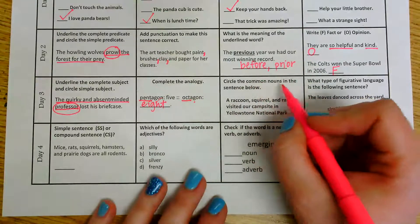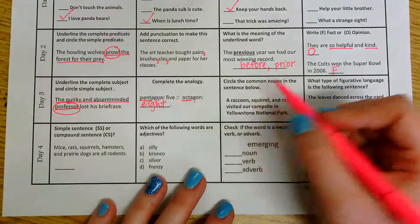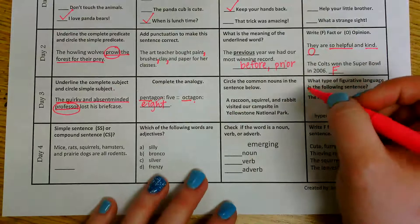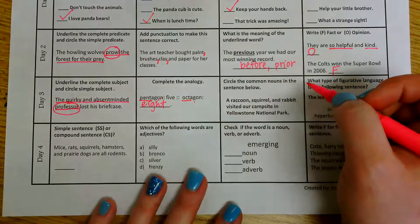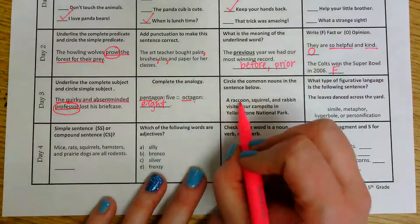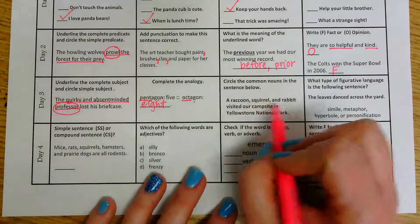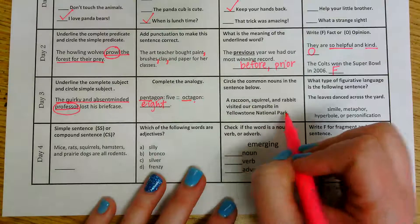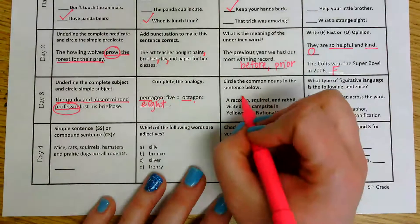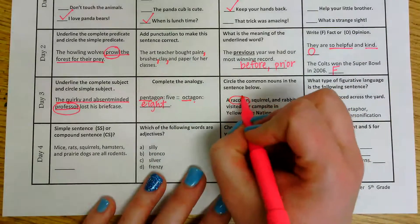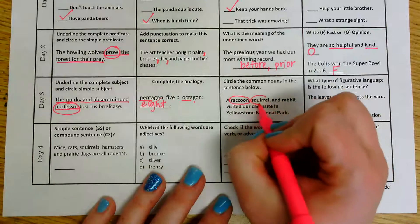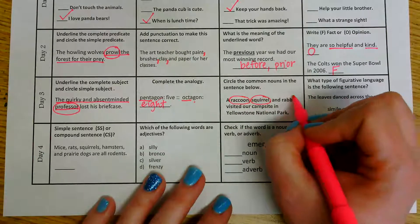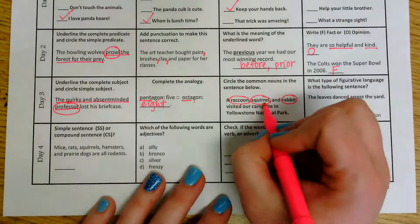The next one, circle the common nouns in the sentence below. All right, remember a noun is a person, place, or thing. So it says a raccoon, squirrel, and rabbit visited our campsite in Yellowstone National Park. All right, well the first one I see is a raccoon. Then I have squirrel, rabbit, and campsite.